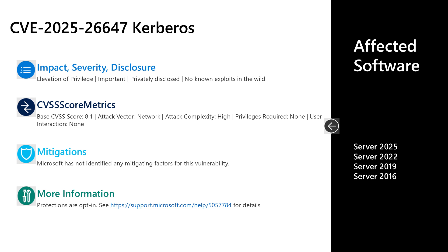Next is CVE-2025-26647, an important severity elevation of privilege vulnerability in Kerberos. This was privately disclosed with no known exploits in the wild. It has a CVSS base score of 8.1 on that scale of 10. The attack vector is over the network, the attack complexity is high, no privileges are required, and no user interaction is required. There are no documented mitigations or workarounds, but there is a unique deployment plan with three steps, each with its own separate date.